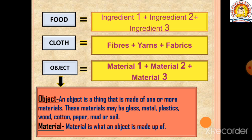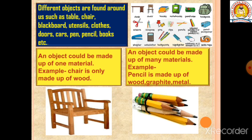Materials are what one object is made up of. Different objects are found around us such as tables, chairs, blackboards, utensils, clothes, doors, cards, pen, pencil, books, etc.